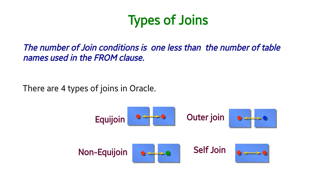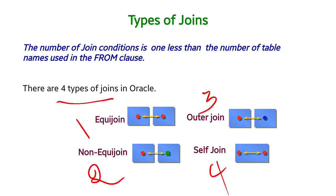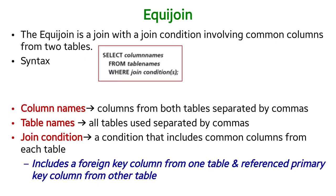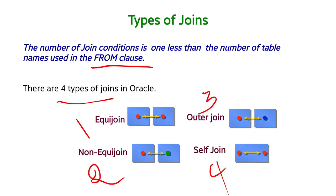There are four types of joins available: the first is equi join, second is non-equi join, third is outer join, and fourth is self join. An important rule: the number of join conditions needed is one less than the number of tables used in the from clause. If you have n tables, you need a minimum of n-1 join conditions.